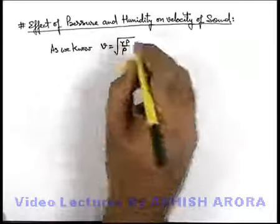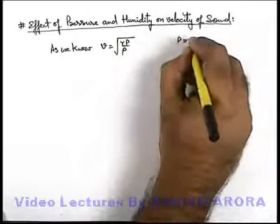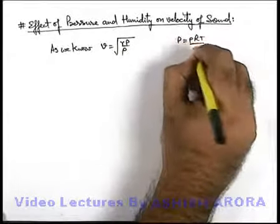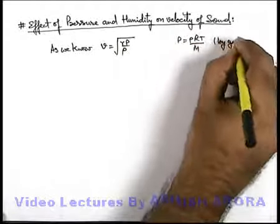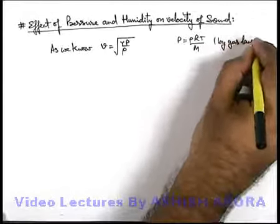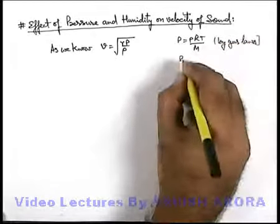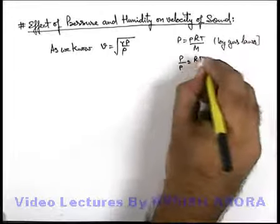And in this situation we also know that P equals ρRT by M, by gas law. And here P by ρ can be written as RT by M.